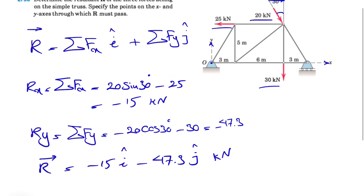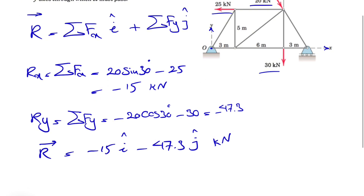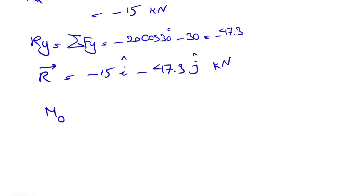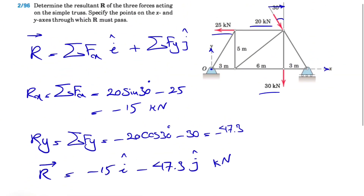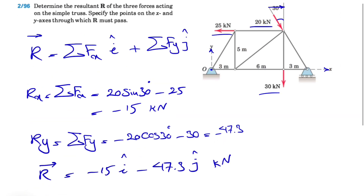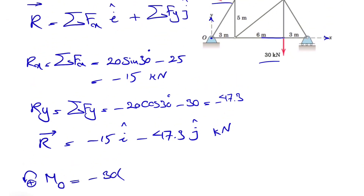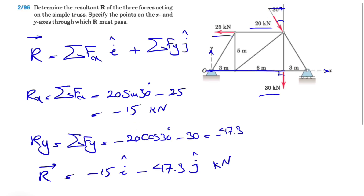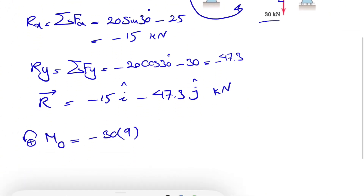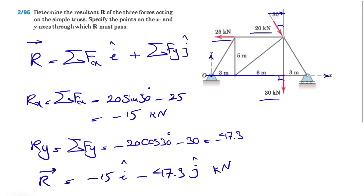We found the resultant, but the question is also asking us to find the location of R — we need to figure out where its line of action is. To do that, we find a moment about the origin (0, 0), which gives us an equation to locate R so it produces the same moment as all three forces. For the moment of the 30 kilonewton force: it's a clockwise moment, so minus 30 times the distance — the vertical distance is 6 plus 3 equals 9. For the 25 kilonewton force: it's a counterclockwise moment, so positive 25 times the vertical distance of 5.